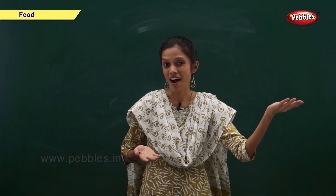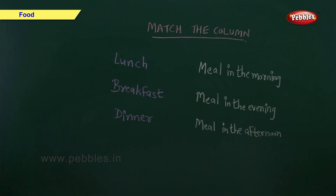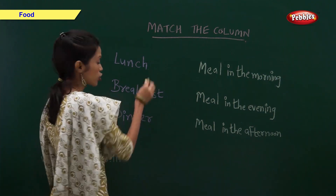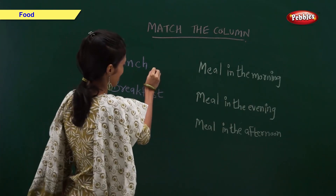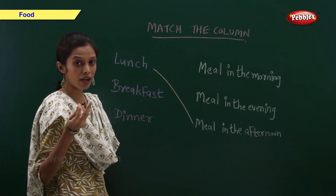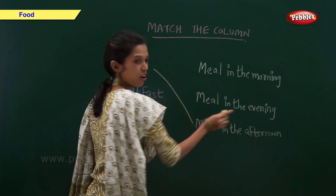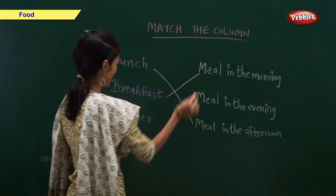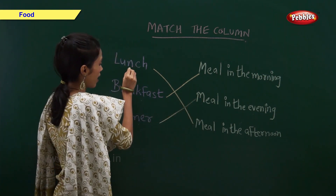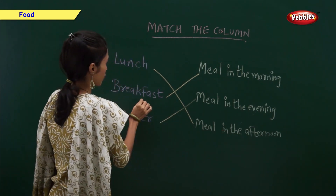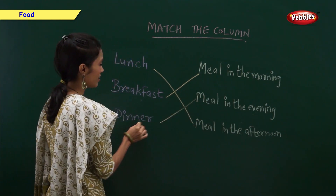Match the column. On one side I have written the name of the meal and on the other side I have written the time at which we eat them. You have to match them. Lunch — when do we take lunch? In the afternoon. Breakfast — when do we take breakfast? In the morning. And dinner — when do we take dinner? In the evening. So, lunch is the meal in the afternoon, breakfast is the meal in the morning, and dinner is the meal in the evening.